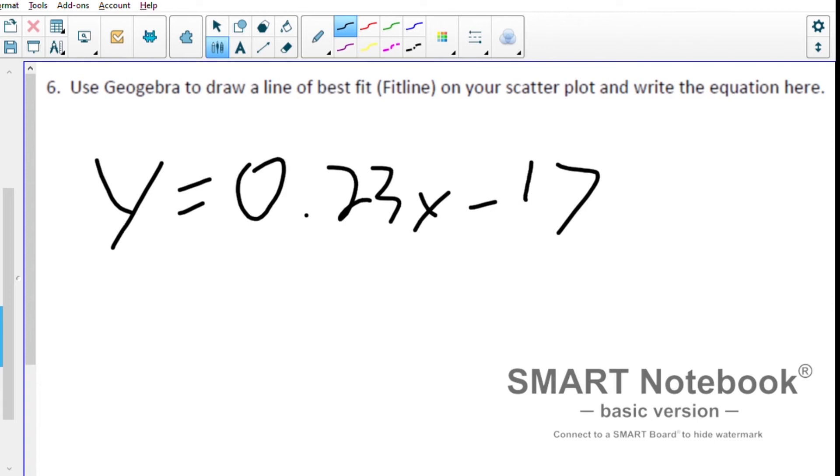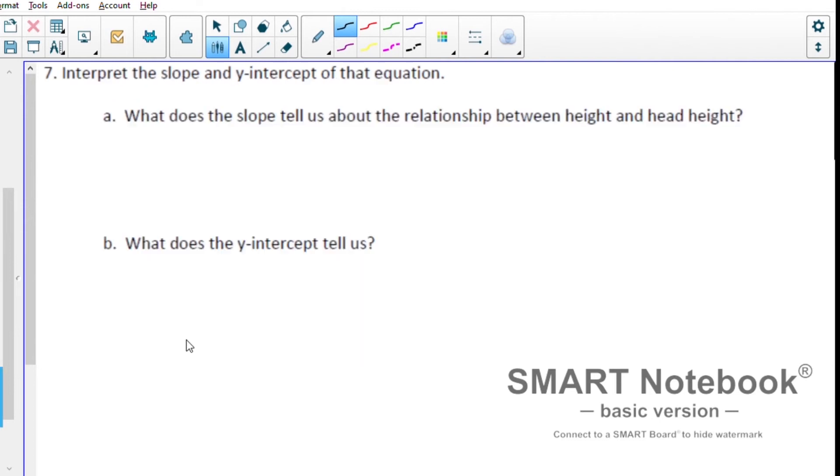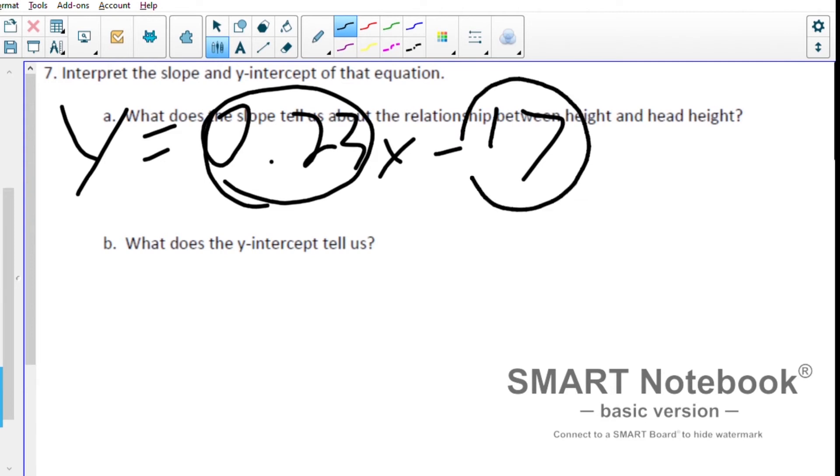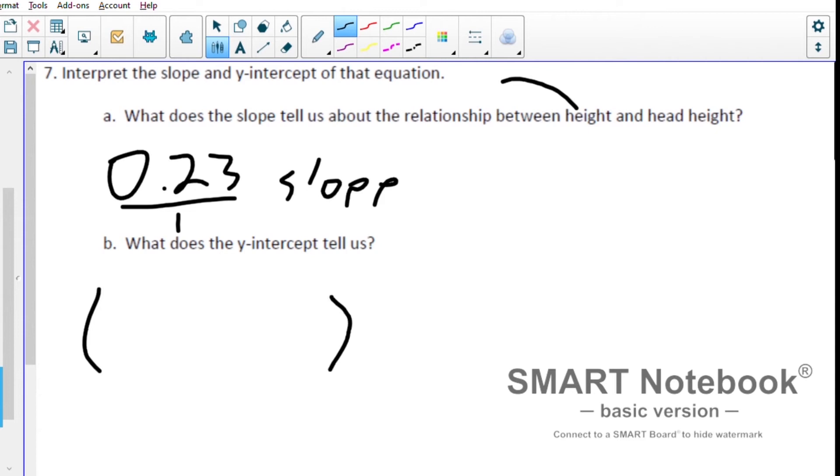That brings us to question number seven. Question seven asks us to interpret the slope and the y-intercept. Our slope right here is 0.23, and our y-intercept is negative 17. We're going to write that as a fraction for the slope, and our y-intercept is negative 17 for the y value and the x value is zero.